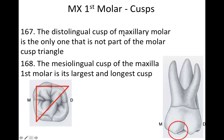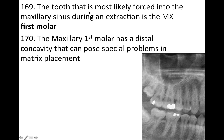The distal lingual cusp of the maxillary molar is the only one that is not part of the cusp triangle. The mesial lingual cusp of the maxillary first molar is going to be the largest and the longest cusp. The tooth most likely to be forced into the maxillary sinus during an extraction is the maxillary first molar. The maxillary first molar also has a distal concavity that can pose special problems in matrix placement.